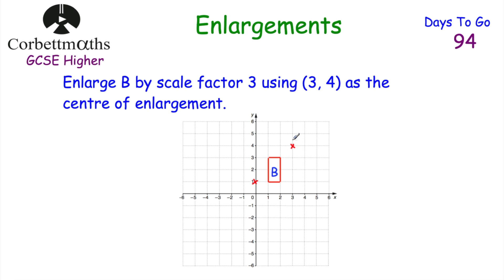For the next point, it's 2 left and 1 down from the centre of enlargement. Multiplying by 3, that's 6 left and 3 down. Then for the third point, it's 1 to the left and 3 down, so multiplying by 3 gives 3 to the left and 9 down — placing the new point there.